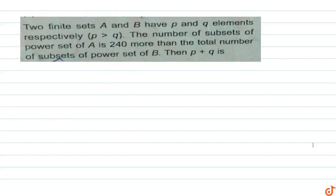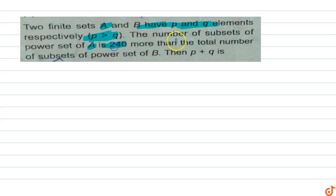In this question, the two finite sets A and B have P and Q elements respectively, and P is greater than or equal to Q. The number of subsets of the power set of A is 240 more than the total number of subsets of the power set of B.